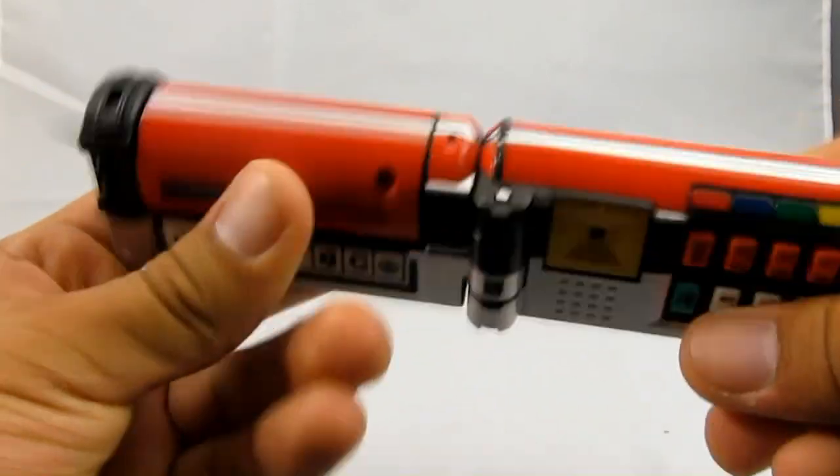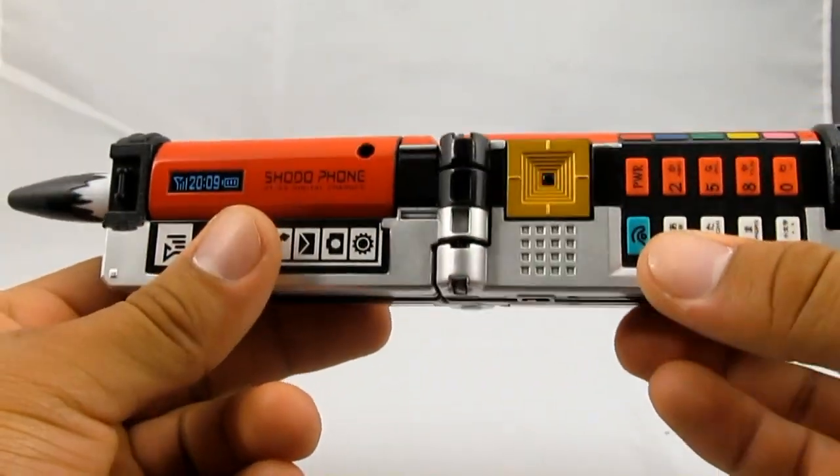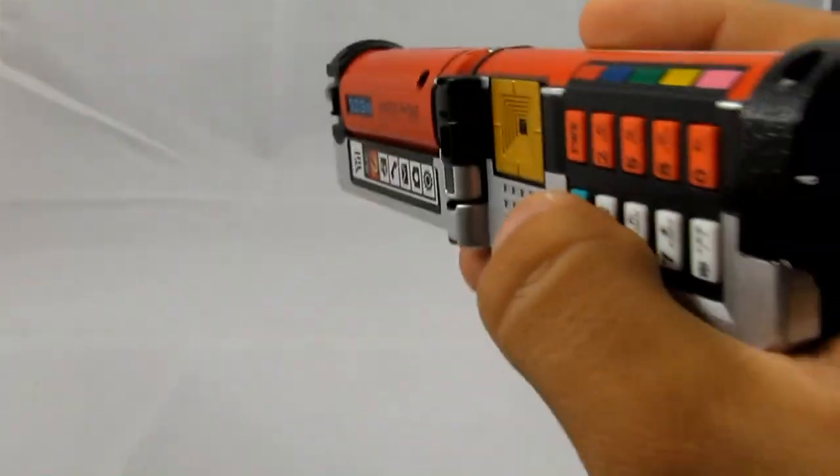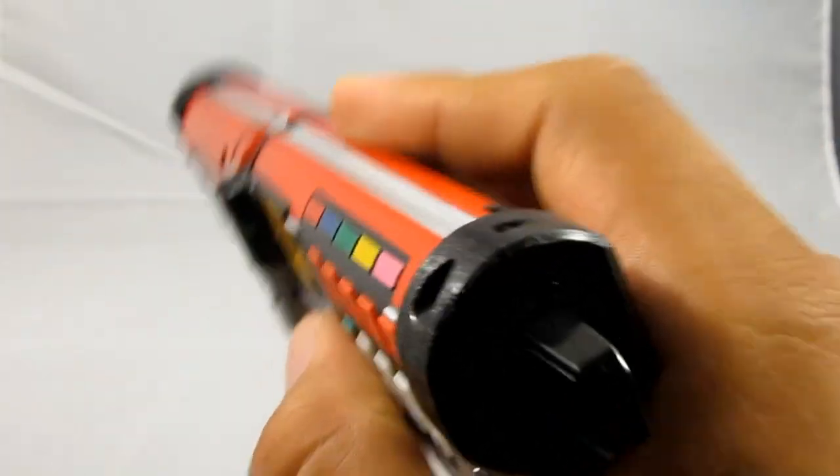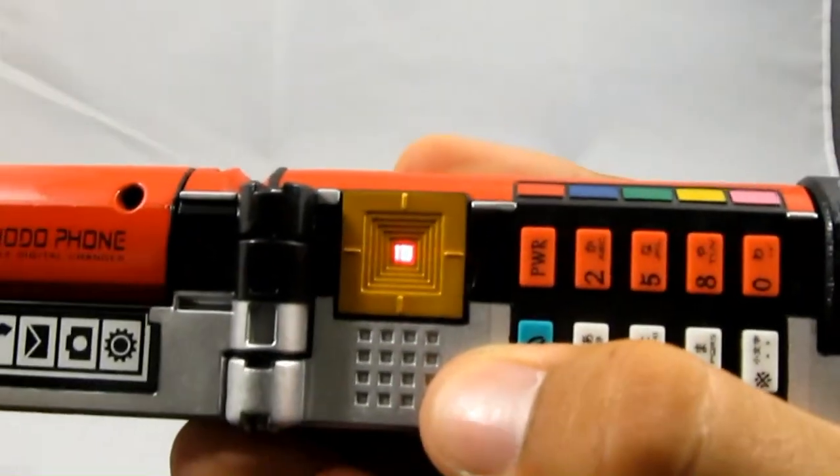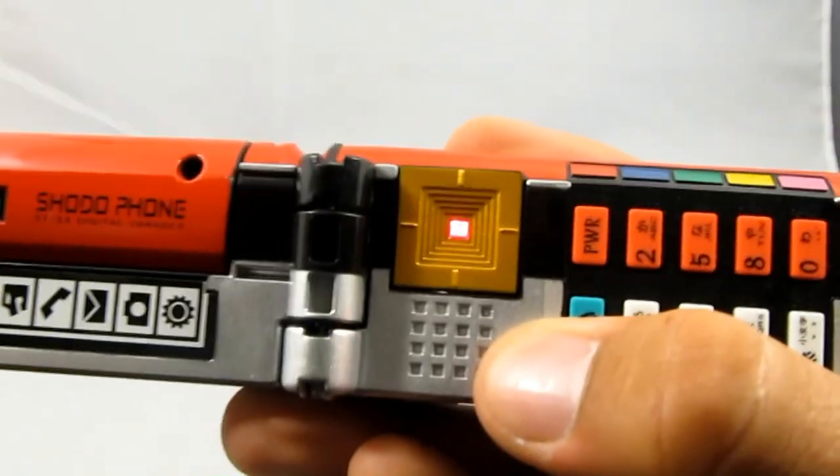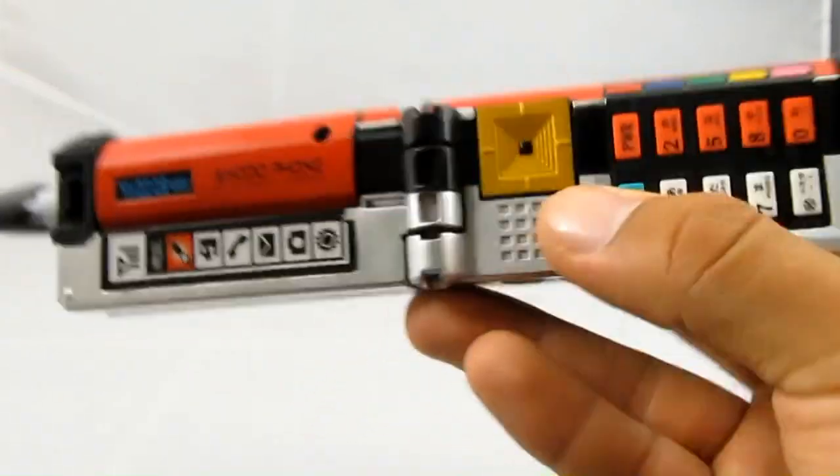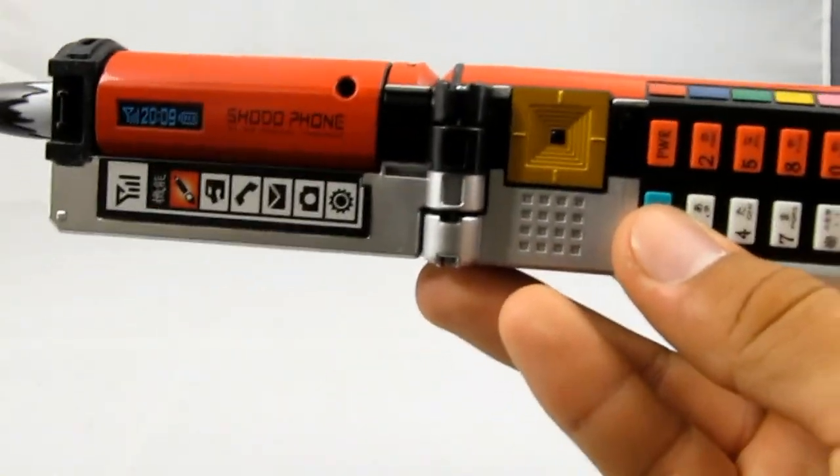So we're going to bend it over. Now do your symbol, which I'll do fire, which is this, this, this, and that. Press the green button here. Yay, you are a Shinkenger. Very cool.